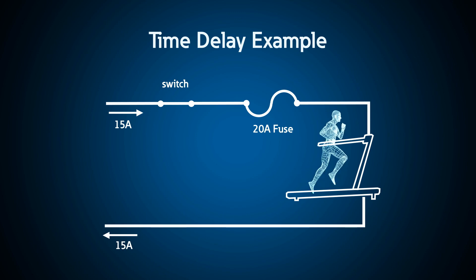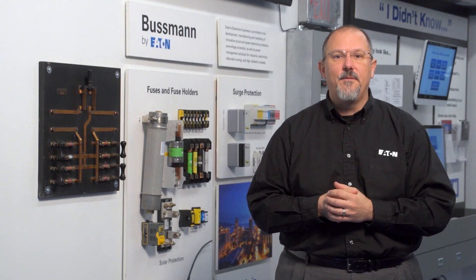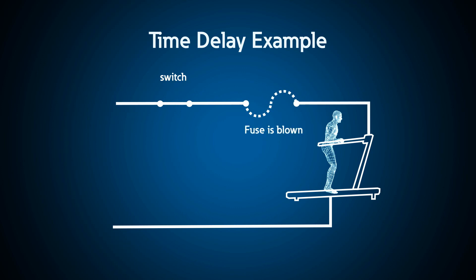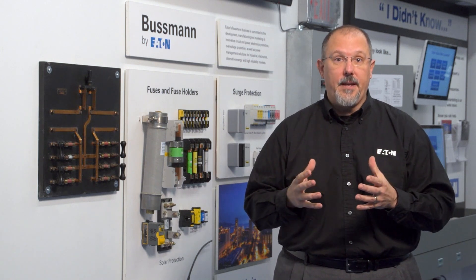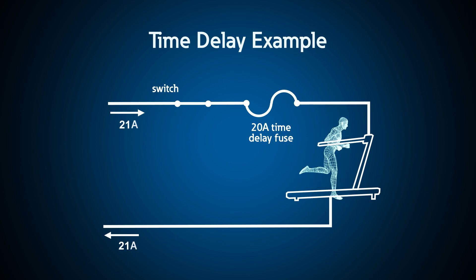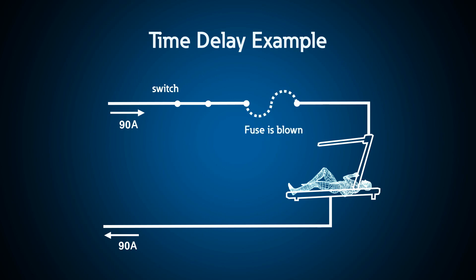For a treadmill with a motor running at 15 amps full load on a 20-amp circuit, the motor will pull roughly six times 15 amps for a short period on startup. A fast-acting fuse would open unnecessarily, so a time-delay fuse is needed — it lets the motor accelerate without opening. However, if the motor locks up, the fuse will only allow locked-rotor current to persist for so long before clearing the circuit.